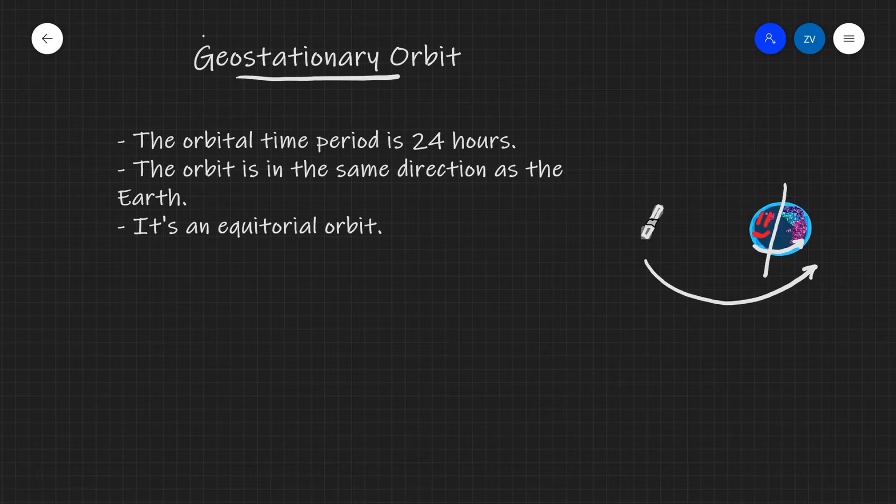So in order to make the orbit appear stationary to an observer on the planet, we need to satisfy the following three conditions. Number one, the orbital time period is 24 hours. If it's not, then the satellite will be continuously overtaking the Earth if it's higher or the Earth will be moving quicker if it's not. However, it will appear to be fixed in the sky only if the orbital time period is 24 hours.